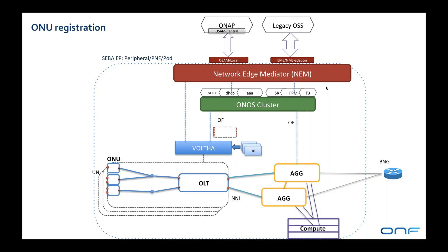The first workflow we're going to show is ONU registration. When a user first comes online, they plug in their ONU and it starts communicating on the PON with the OLT, sending messages to register itself. The OLT detects this and sends an indication to Volta that a new ONU has come online on the PON.